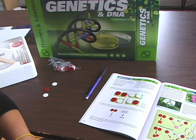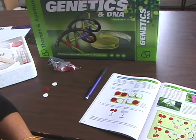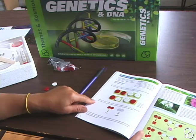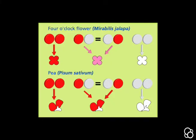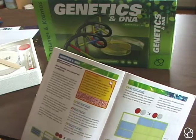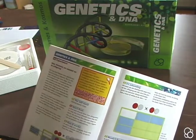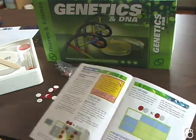You can read more about that in the manual and look at the corresponding image. Now we're going to do experiment eight: how features are passed on to offspring.